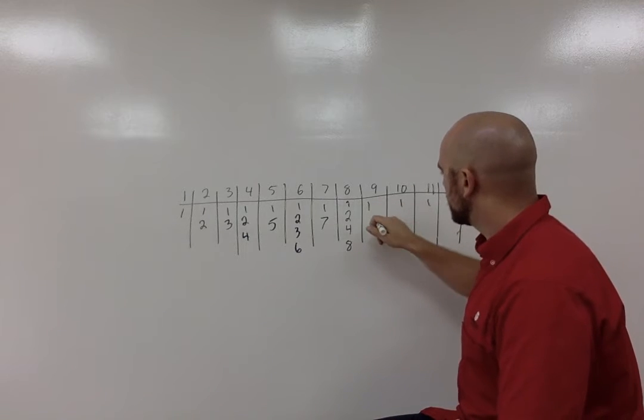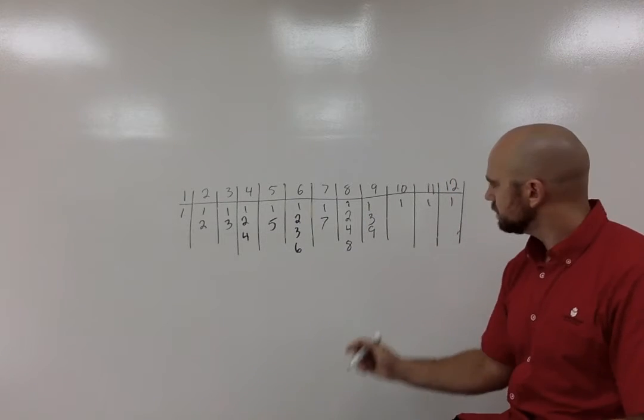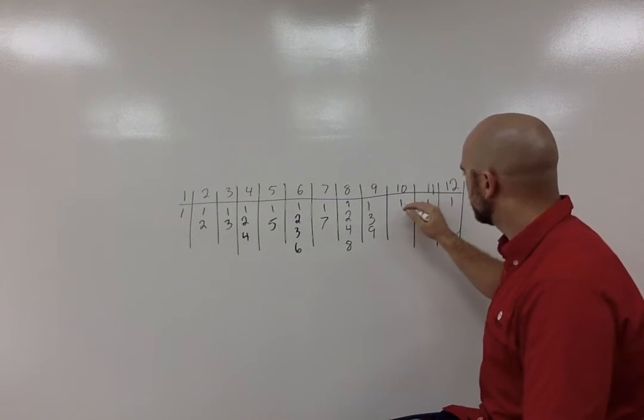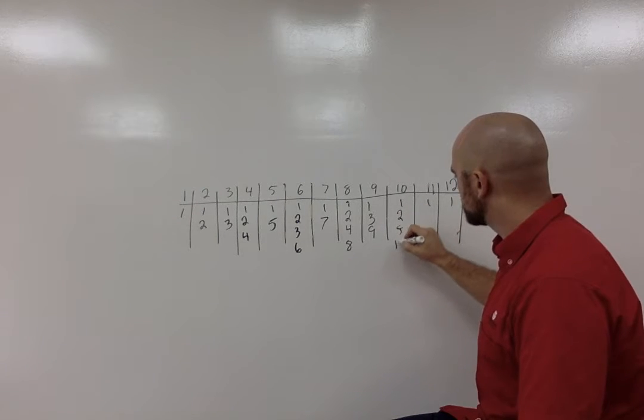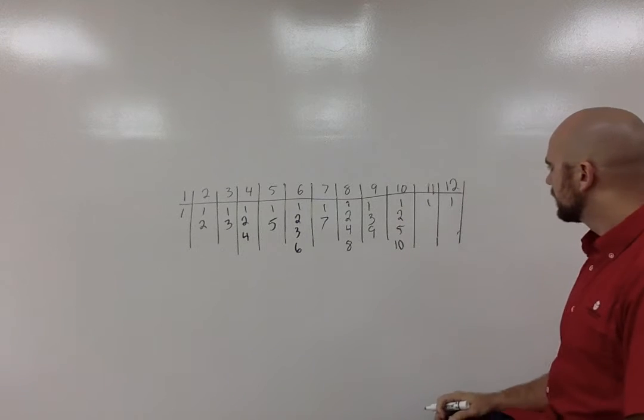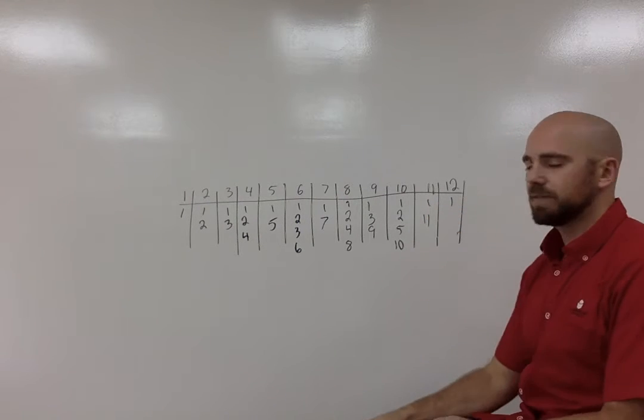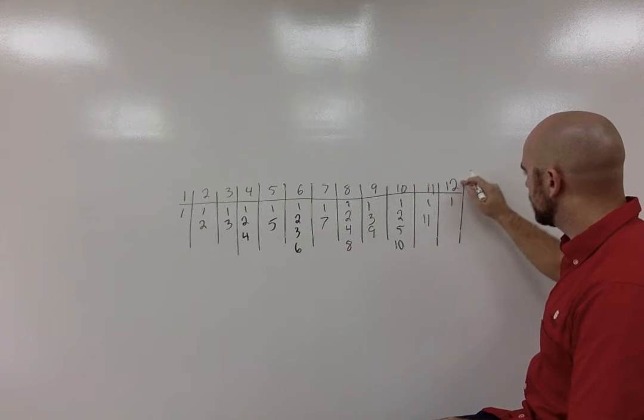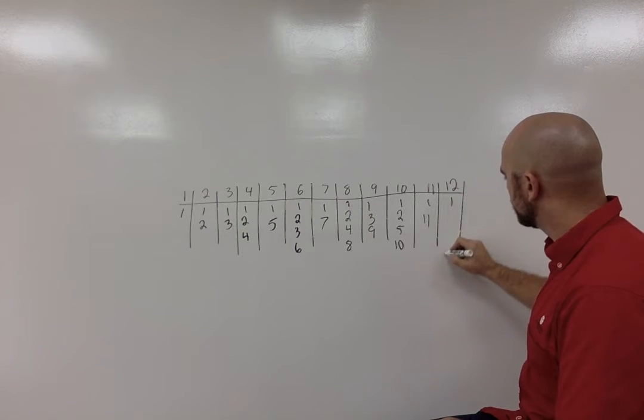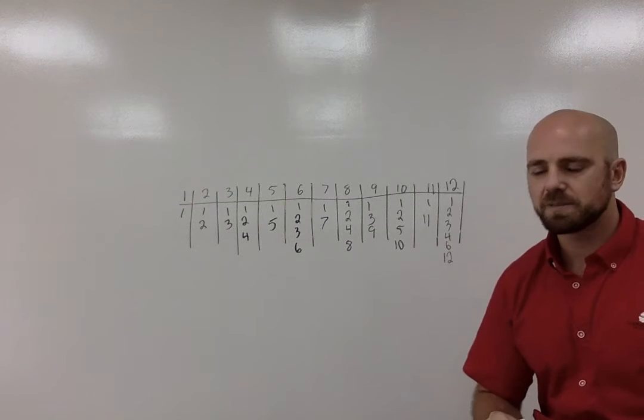The next one we have one times nine, but we also have three times three. Over here we have 10. So we can go two times five and then one times 10. When we get to 11, well, that's also a prime number. So it's one times 11, one times itself. Here, this one has a lot. So we have one times 12, we have two times six, and then we also have three times four. So we have all of these possible answers.